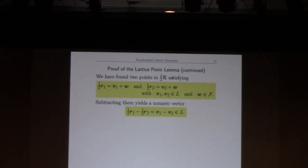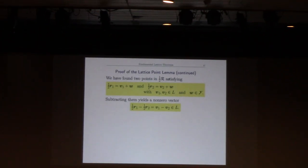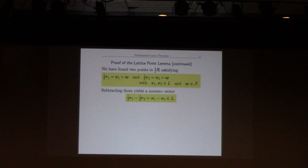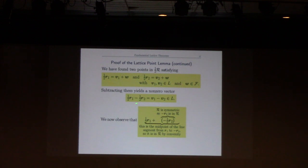That's not zero, that's the point we're looking for. I just need to prove it has the properties that we want. This is a point in L, and now I'm going to observe — here's the trick: I have one half r1 minus one half r2, and I claim that this is actually in the region R.